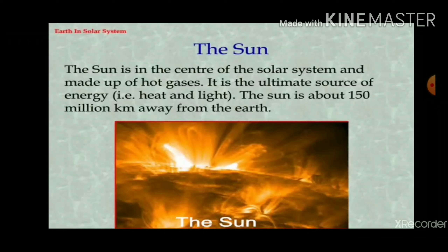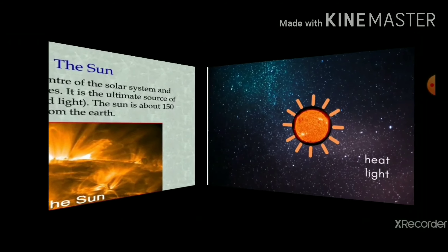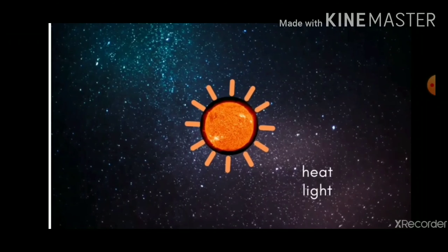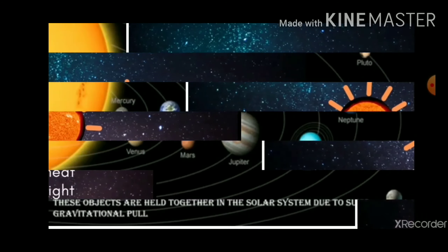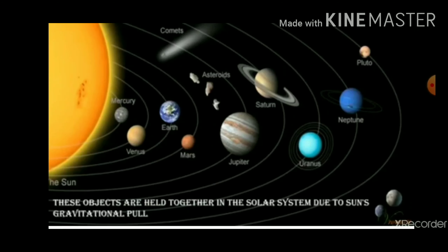Despite the sun's tremendous heat, we do not feel it so much because, even though it is our nearest star, it is still very far away from us — about 150 million km from Earth. All these objects are held together in the solar system due to the sun's gravitational pull.